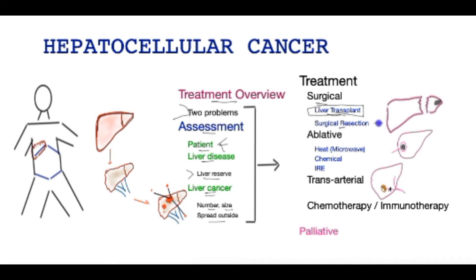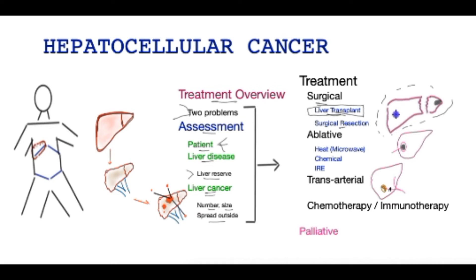Surgical resection, as the name suggests, involves the liver tumor being removed surgically with a margin of normal liver tissue, and this may provide long-lasting benefit to the patient. Unlike a liver transplant, the diseased liver may still generate potential liver tumors in the future.